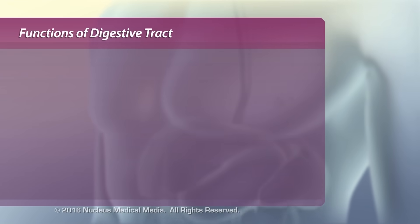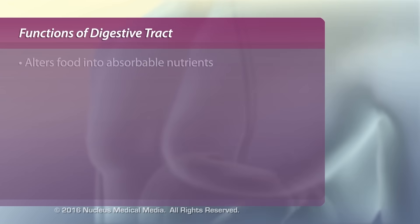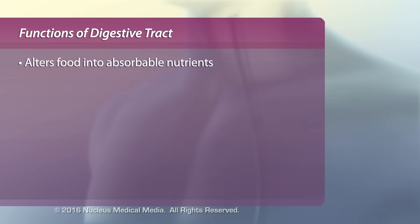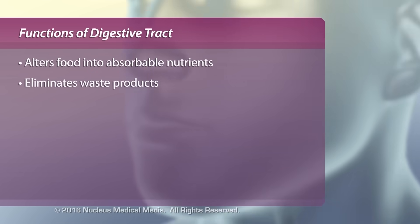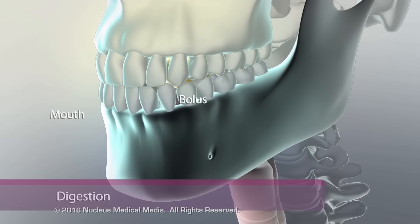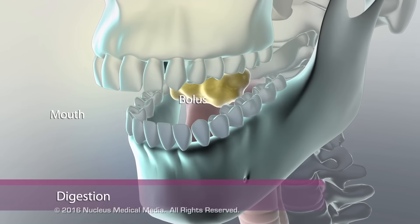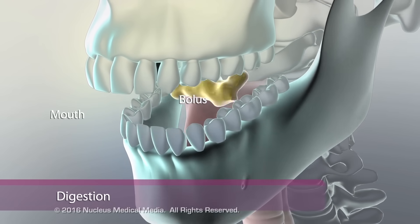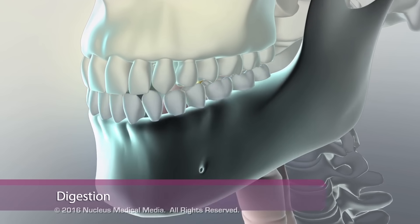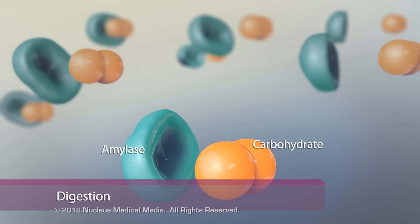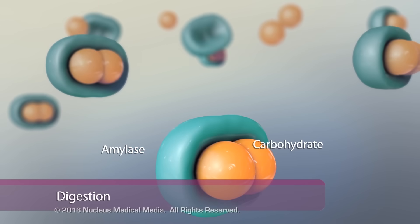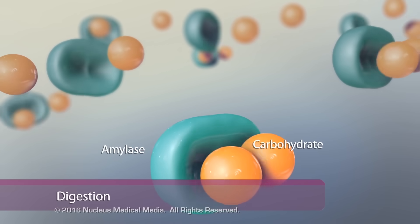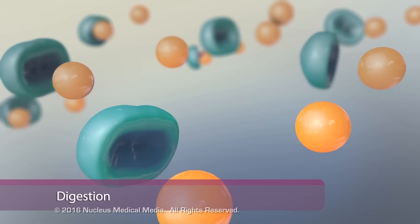The digestive tract alters food into readily absorbed nutrients and eliminates waste products. Digestion begins in the mouth; saliva moistens the food, and amylase, an enzyme in saliva, begins the process of breaking it down.